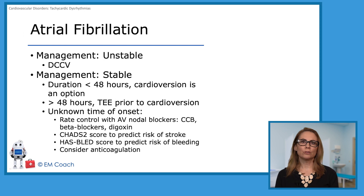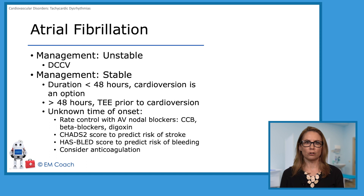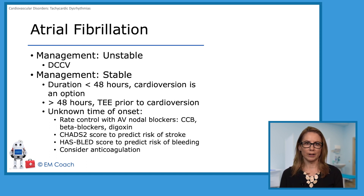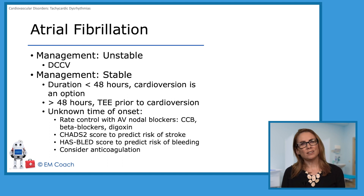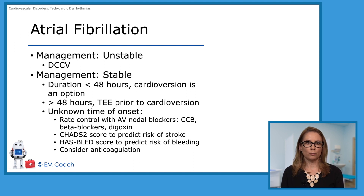If it's been more than 48 hours, you need to confirm there are no clots that have developed — you need a TEE to make sure there are no thrombi that could get ejected when you convert back to normal rhythm. If the time of onset is unknown, which is honestly the most common scenario, you want to rate control with an AV nodal blocking agent.